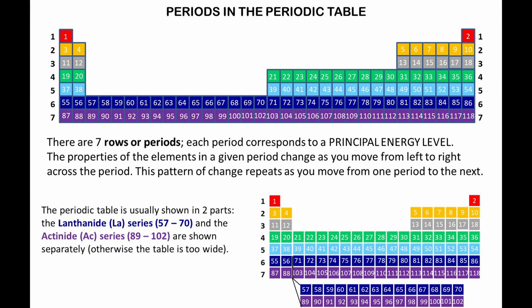The periodic table is usually shown in two parts. The lanthanide series, elements 57 to 70, and the actinide series, elements 89 to 102, are shown separately, otherwise the table is too wide.